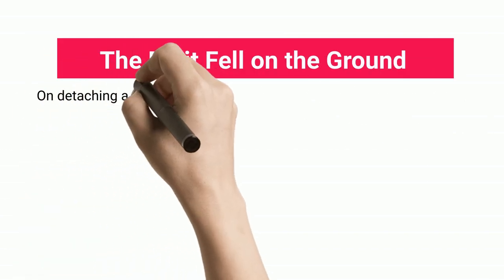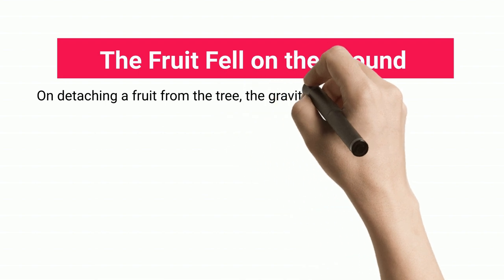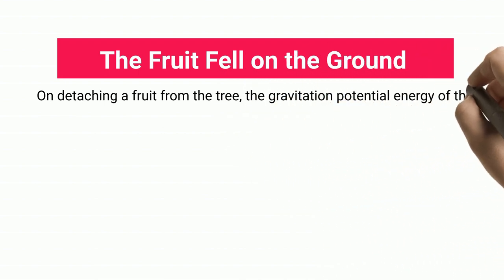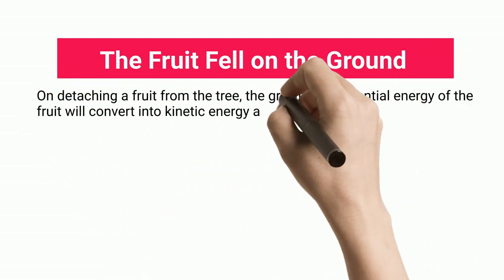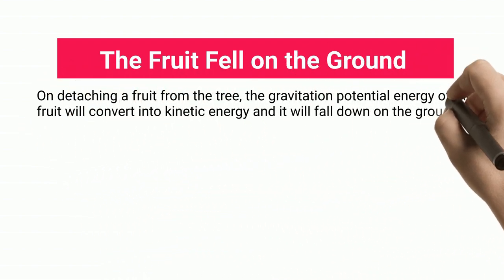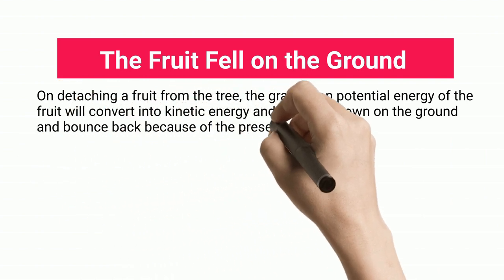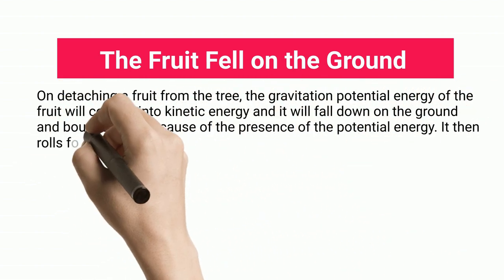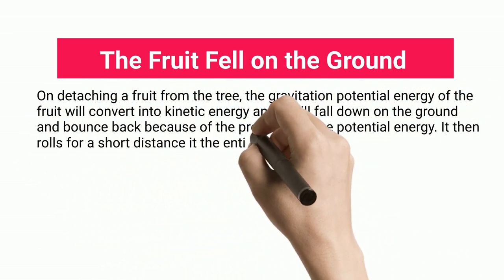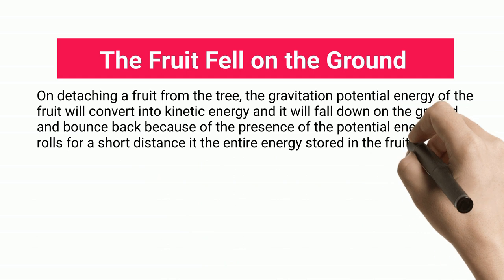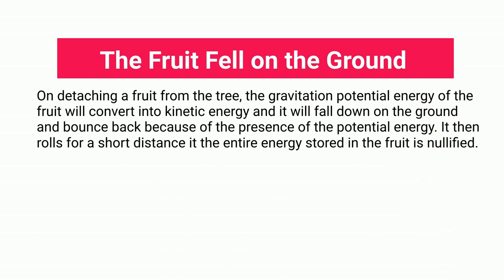The fruit fell on the ground. On detaching a fruit from the tree, the gravitational potential energy of the fruit converts into kinetic energy and it falls down on the ground, bouncing back because of the presence of potential energy. It then rolls for a short distance until the entire energy stored in the fruit is nullified.